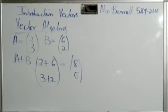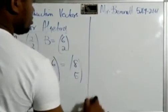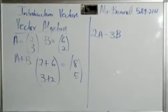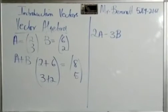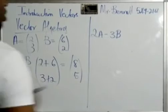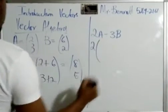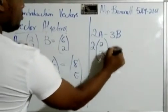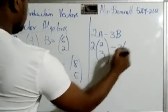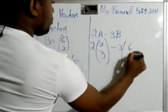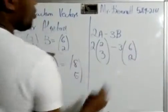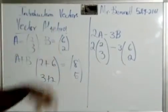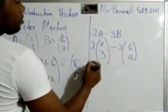We could also get something like this. Say 2A minus 3B. But you guys already can do this based on the scalar factor, right? So 2 would be your k. And then we times that by (2, 3) minus 3B, which is (6, 2). Something that I want you guys to know, very important. We multiply first before we subtract.